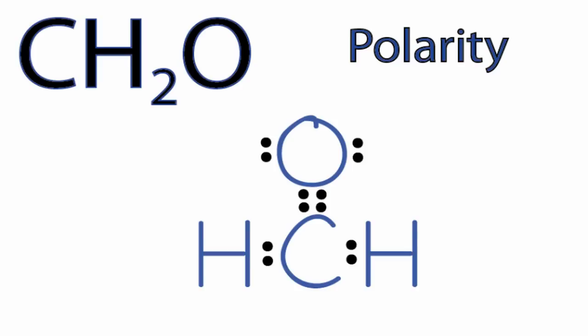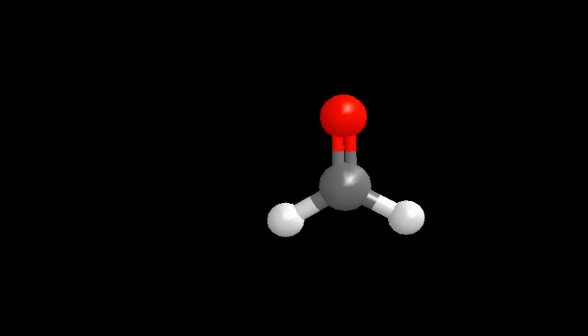Let's take a look at the three-dimensional structure for the CH2O molecule to look at its polarity a little deeper. So here's our three-dimensional model, and we can see those hydrogens there at the bottom in white and the oxygen at the top in red.